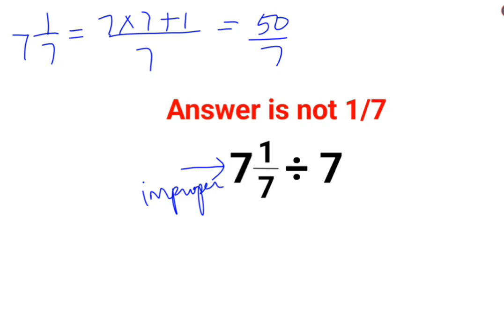So here 7 1/7, instead of that we will write it as what? 50 divided by 7 divided by 7.